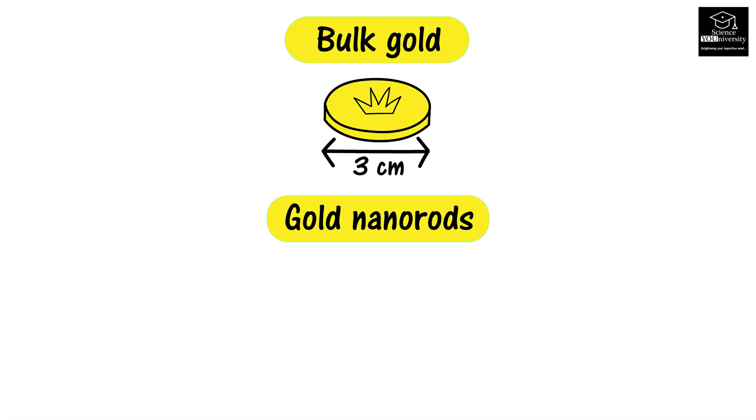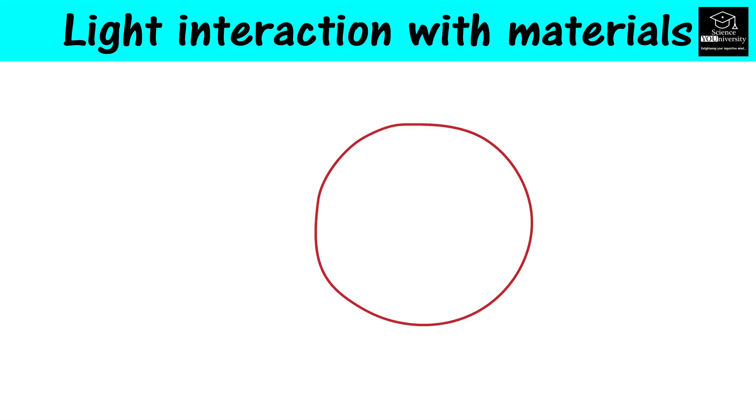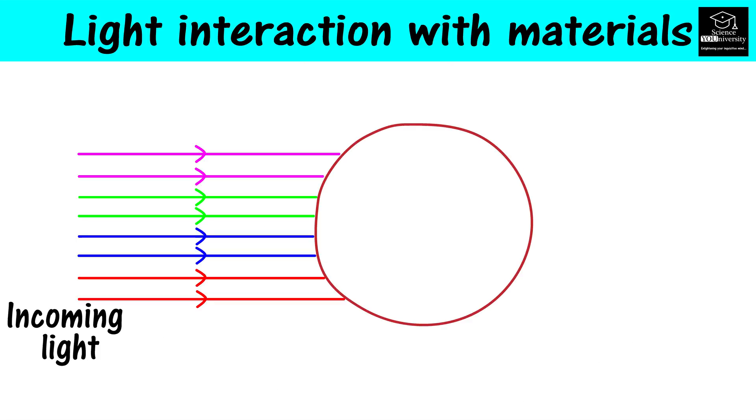For example, we can see gold coins in gold color, but gold nanoparticles have different colors. The color of any material depends on how the material interacts with incoming light.